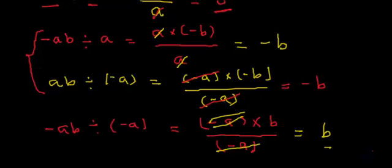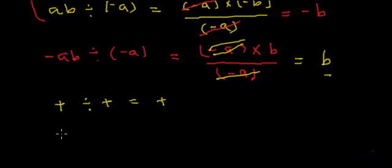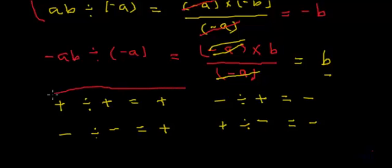It is very much the same as the behavior of signs in multiplication. To summarize: when a positive term gets divided by a positive term, we get a positive quotient. When a negative term gets divided by a negative term, we also get a positive result. But when a negative term gets divided by a positive term, the quotient will be negative. And when a positive term gets divided by a negative term, we also get a negative quotient. So as we can see, the signs pretty much behave in division as they do in multiplication.